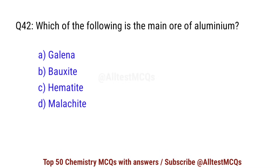Question number 42. Which of the following is the main ore of aluminum? Correct option is B: bauxite.